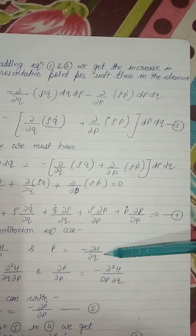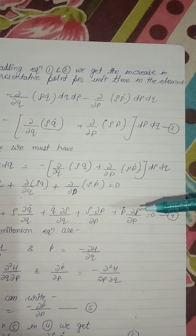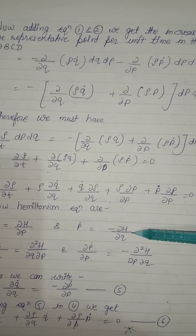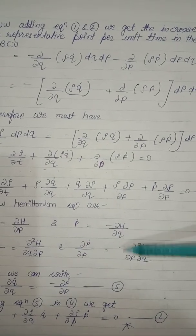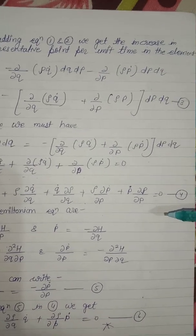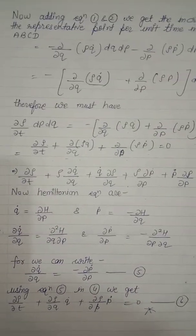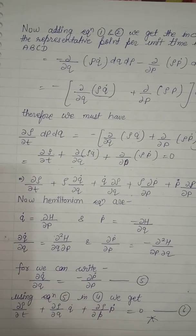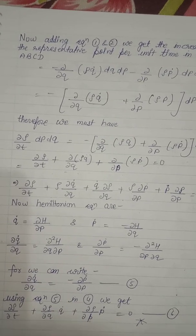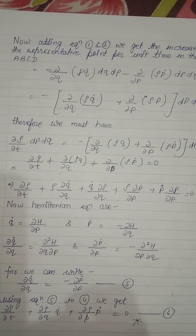From Hamilton's equations, we know Q̇ = ∂H/∂P and Ṗ = minus ∂H/∂Q. Therefore ∂Q̇/∂Q = ∂²H/∂Q∂P and ∂Ṗ/∂P = minus ∂²H/∂P∂Q. This gives us equation five: ∂Q̇/∂Q = minus ∂Ṗ/∂P. Using equations five and four, we get equation six: ∂ρ/∂t + (∂ρ/∂Q)Q̇ + (∂ρ/∂P)Ṗ = 0.